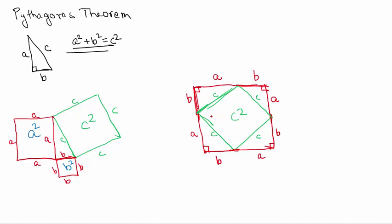What we have to prove is that this area C squared can also be represented as A squared plus B squared. The length of the outer side of this arrangement is A plus B, and since both sides are A plus B, the outer structure is actually a square with side A plus B. If I take this larger square and deduct all four triangle areas from it, we get the area represented by C squared.